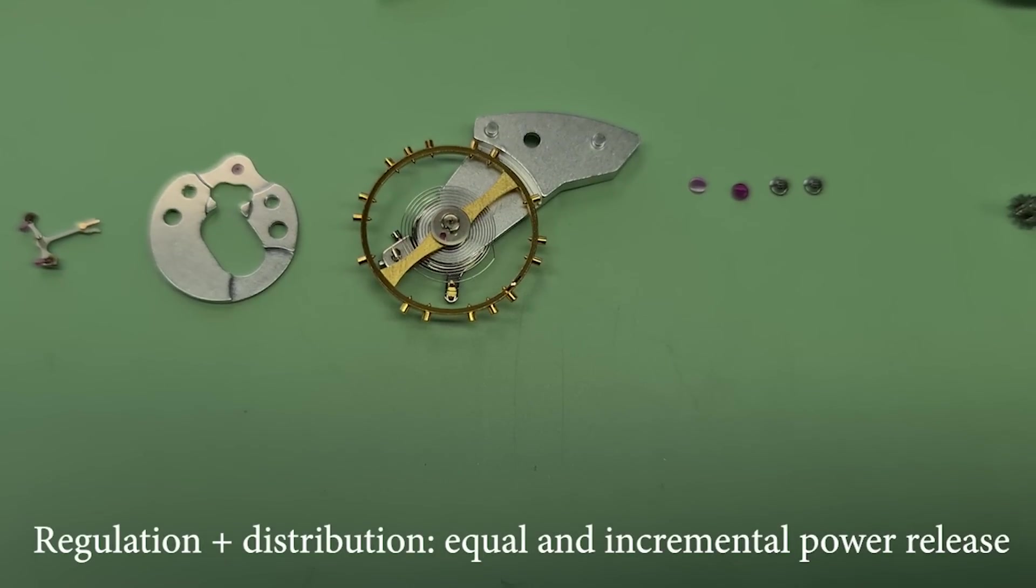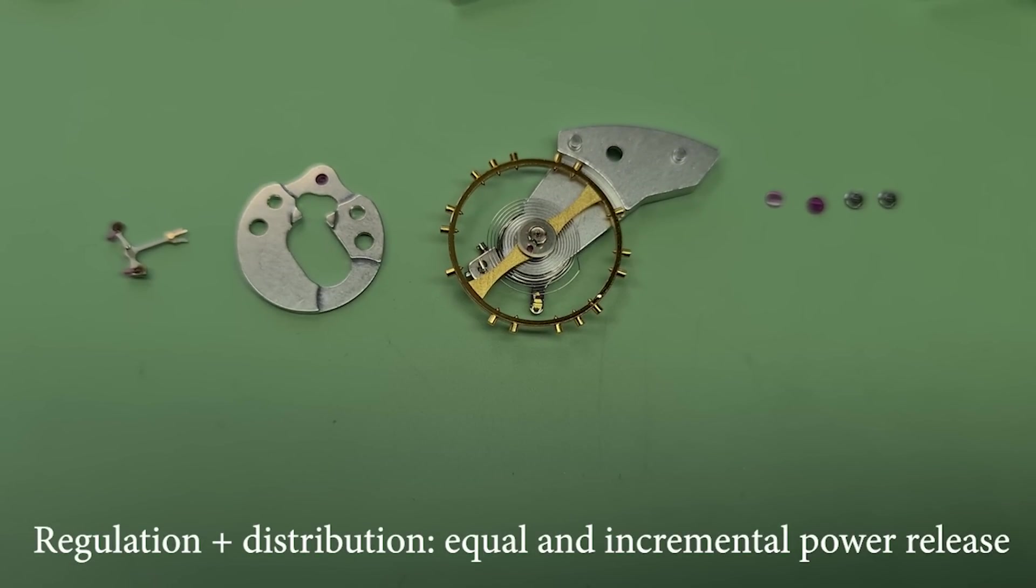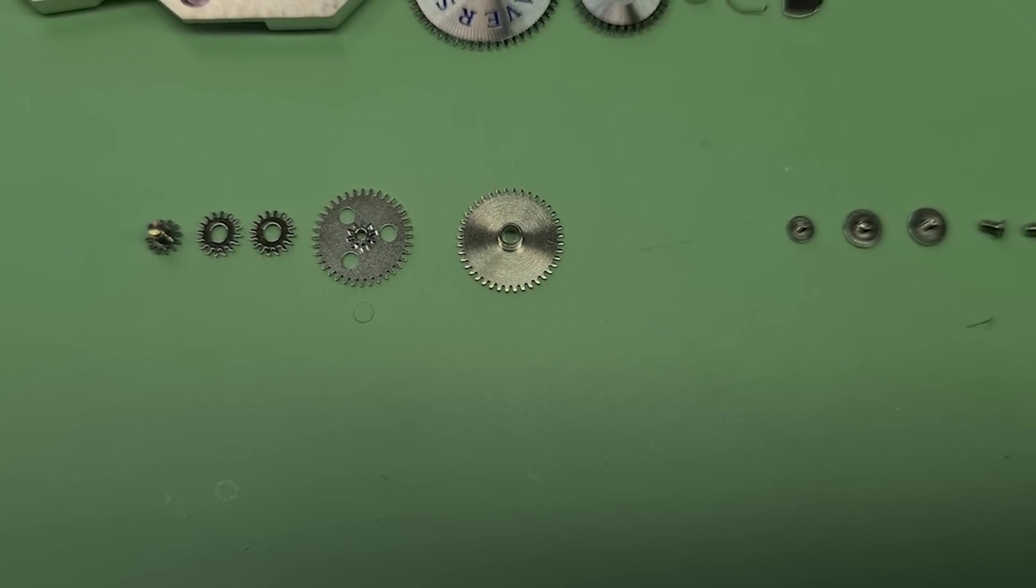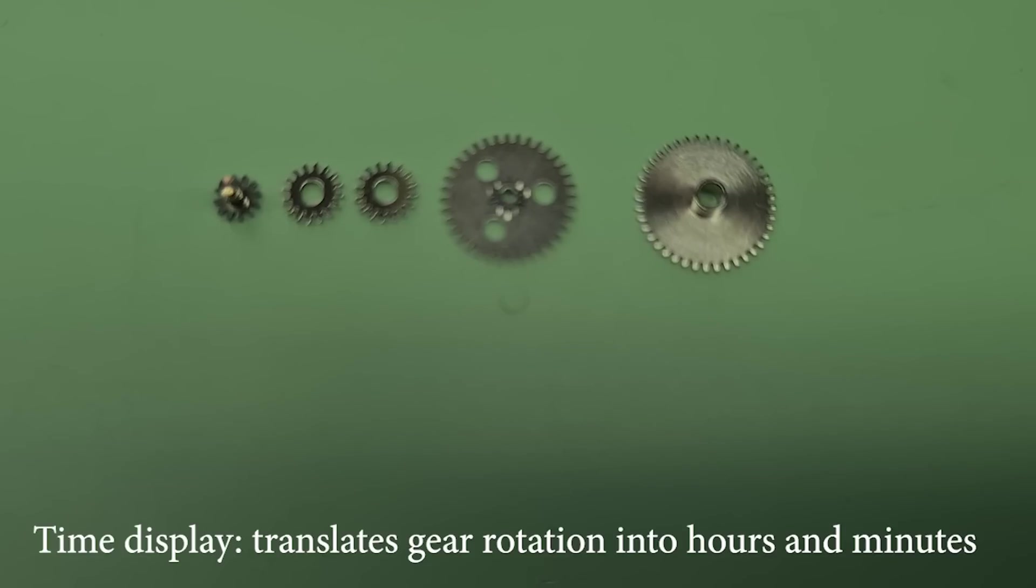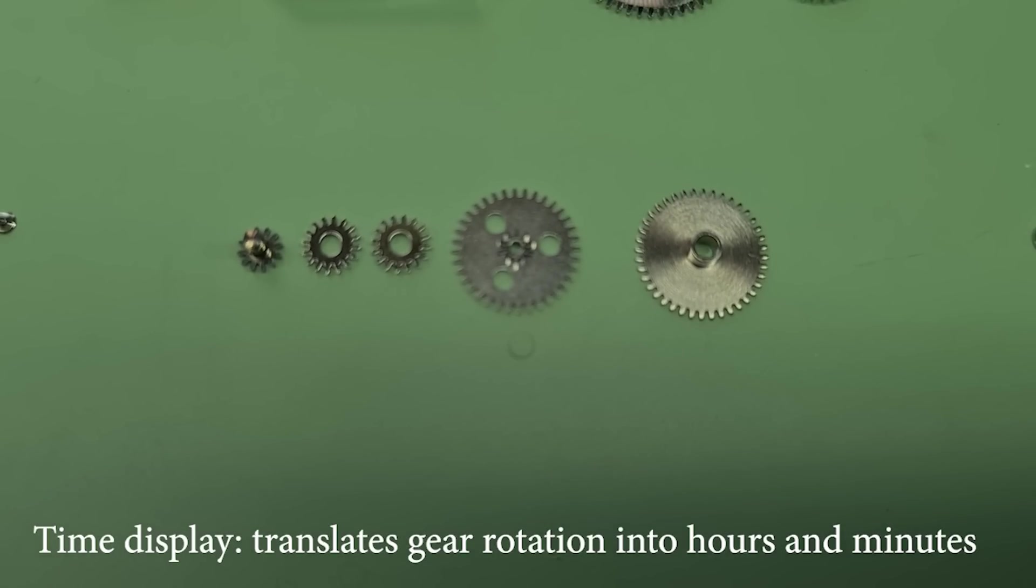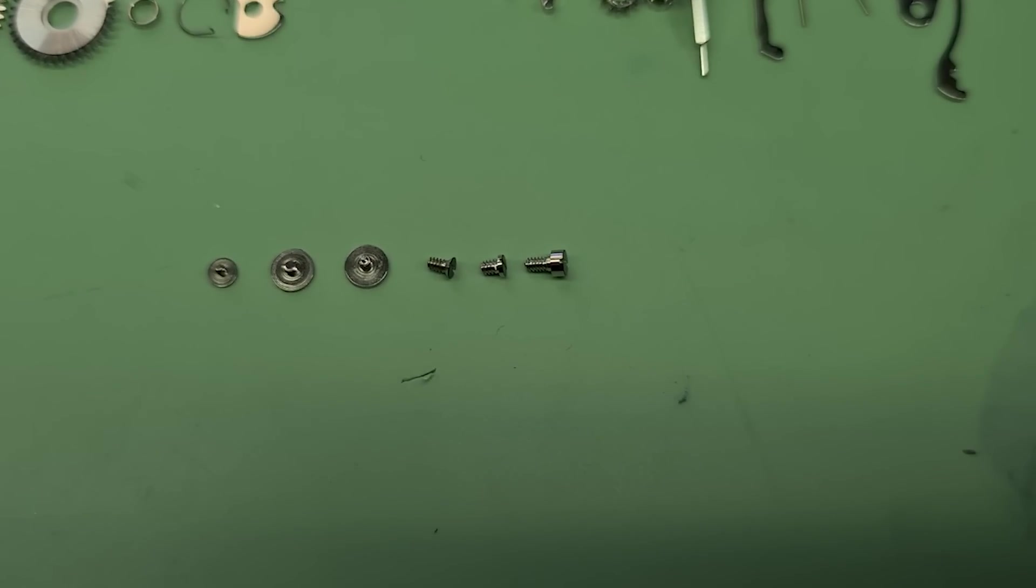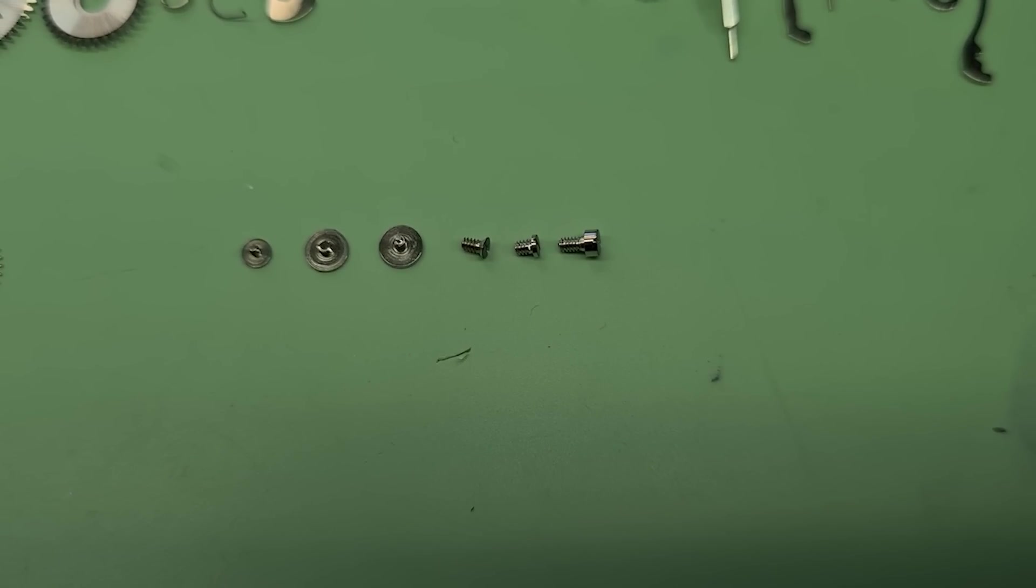The power is nothing without control, so we need something to regulate it, and we also want to make sure that power from the mainspring is released in equal increments of time. And finally, we need something to help show the time, so basically move the hands around the dial. And we need something to help keep all these things in place, and for that we have screws. There are much more than these six screws in the movement, but these are the six different types of screws there are.